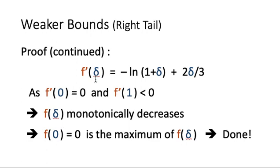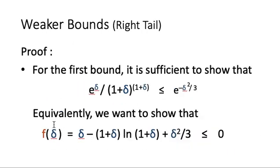Since f'(delta) first decreases then increases, and we find that f'(0) = 0 and f'(1) < 0, f' starts at 0, decreases, then rises but remains negative. This implies the slope of f is always 0 or negative, so f(delta) is monotonically decreasing. Therefore the maximum of f is at the leftmost endpoint: f(0) = 0. Since f is decreasing from 0, we have f(delta) ≤ 0 for all delta in [0, 1], completing the proof of the first bound.